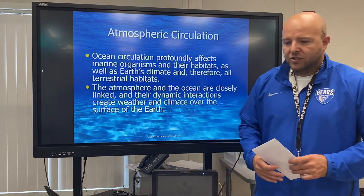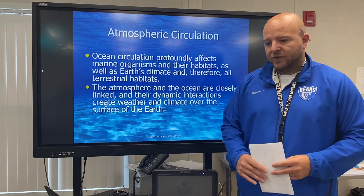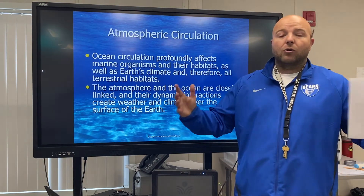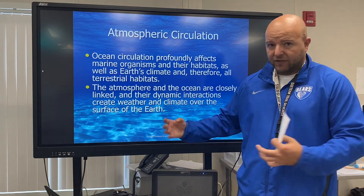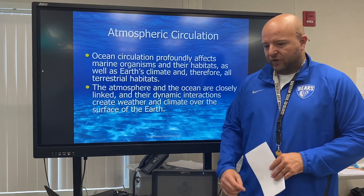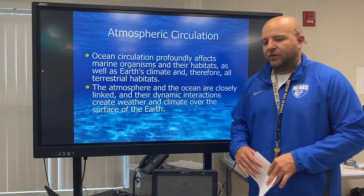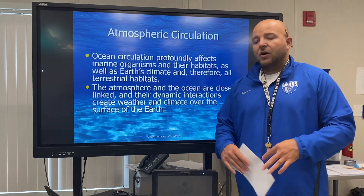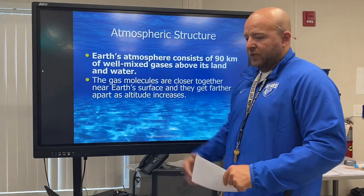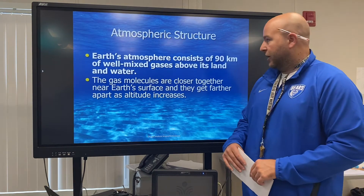Ocean circulation profoundly affects marine organisms and their habitats, as well as Earth's climate, and therefore all terrestrial habitats — even the things that are not in the water. The atmosphere and the ocean are closely linked, and their dynamic interactions create weather and climate over the surface of the Earth. Now we get into our first section on your study guide: atmospheric structure.